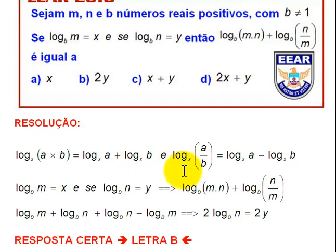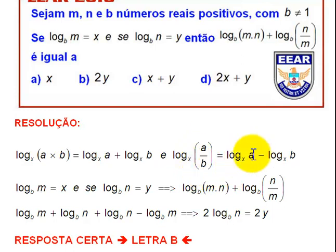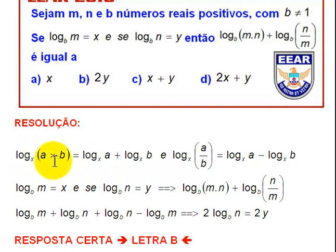O logaritmo de um quociente vai virar uma diferença de logaritmos. Então, o logaritmo na base X de A sobre B é igual ao logaritmo na base X de A menos o logaritmo na base X de B. Ainda tem o da potência: o logaritmo na base X de A ao cubo é o mesmo que 3 vezes o logaritmo na base X de A.